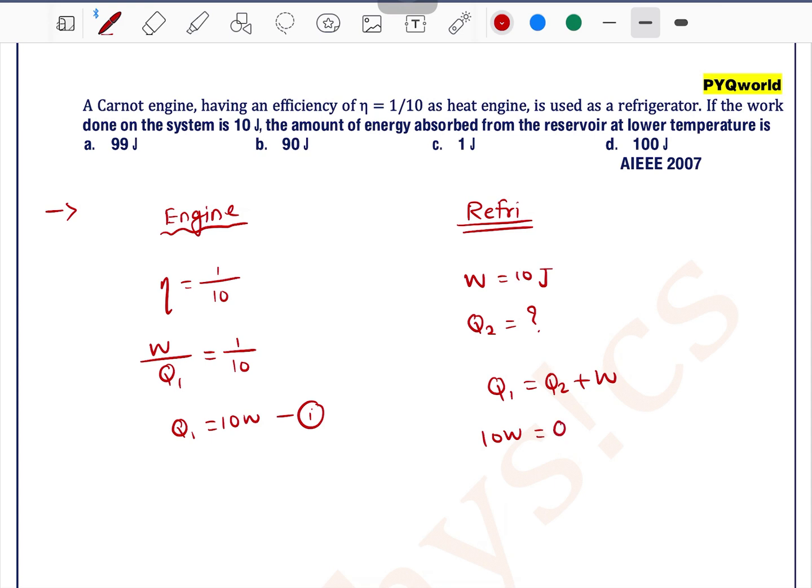So Q1 is 10W is equal to Q2 plus W. So this is 9W is equal to Q2. So Q2 can be written as 9 into 10 is 90 joules. So the correct answer is option B.